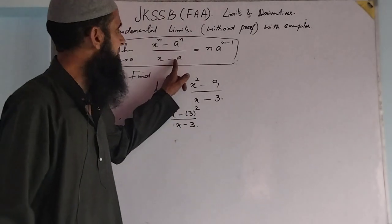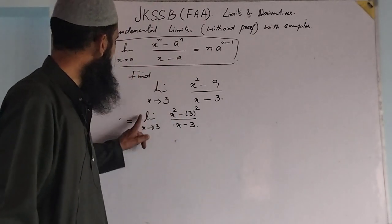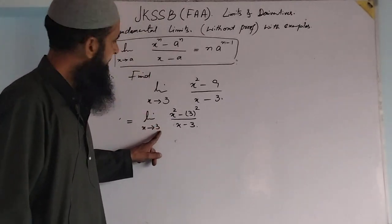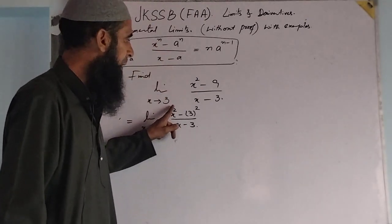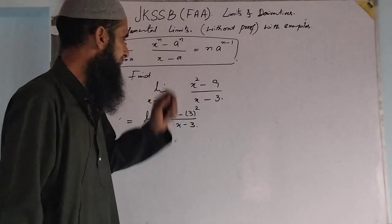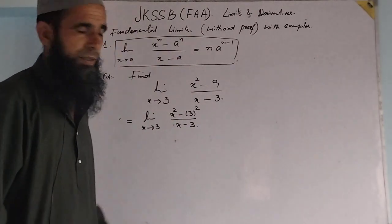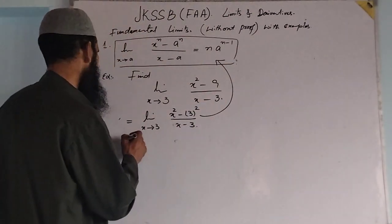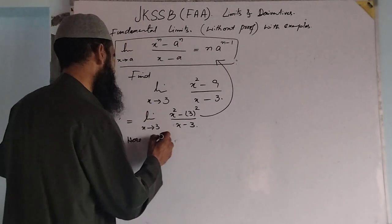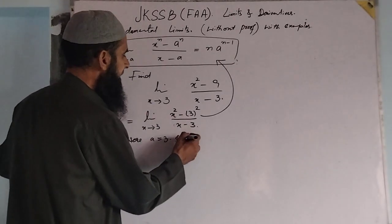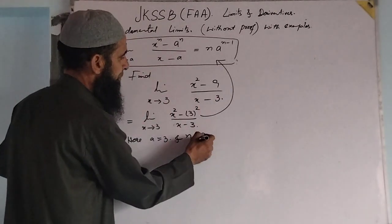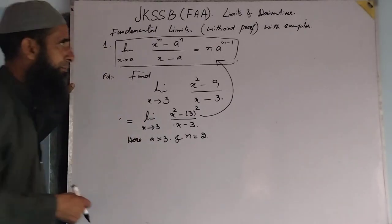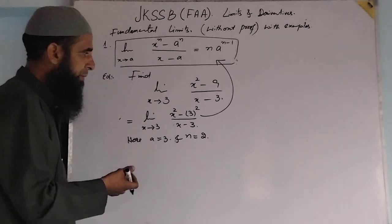Clearly compare this with the fundamental limit formula. We have limit x tends to a, so here a equals 3. We have x raised to power n minus a raised to power n, so x raised to power 2 minus a raised to power 2, divided by x minus 3. Comparing, we get a is equal to 3 and n is equal to 2. Substituting these values, we can easily verify the limit in just two steps.